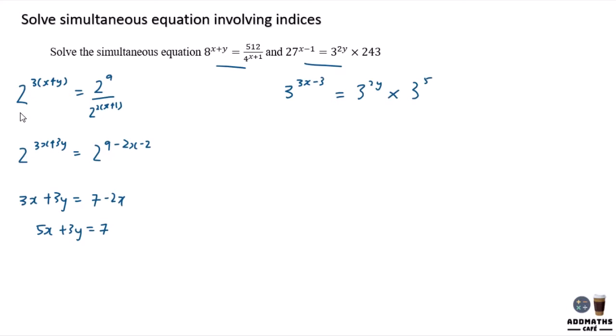So let's say I would like to make x as the term. So 5x equal to 7 minus 3y. x equal to 7 minus 3y over 5. This will be your number 1.